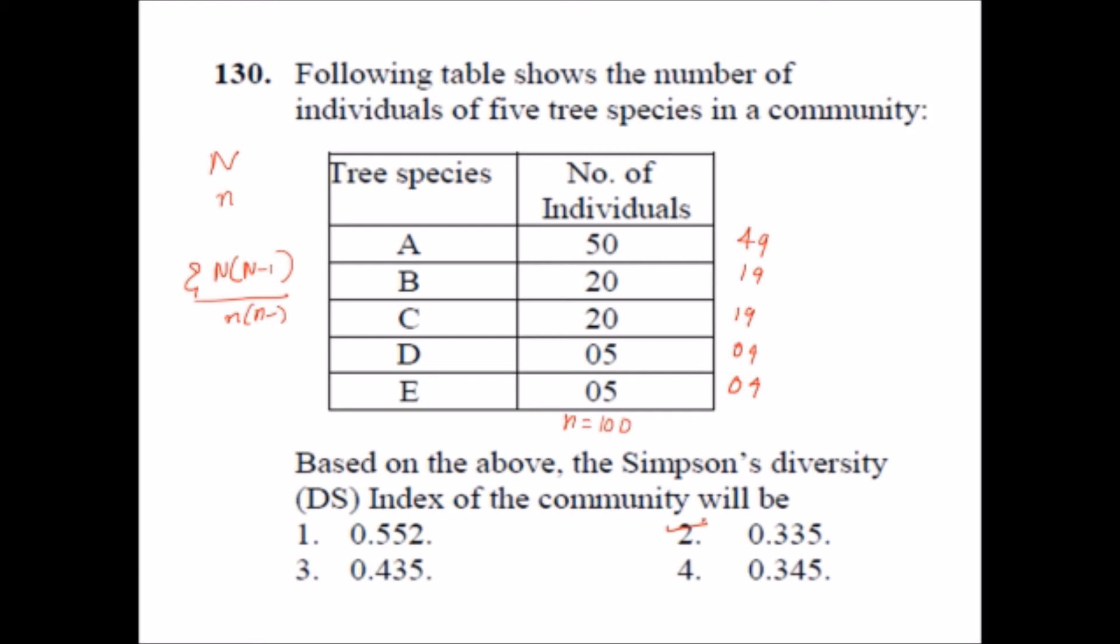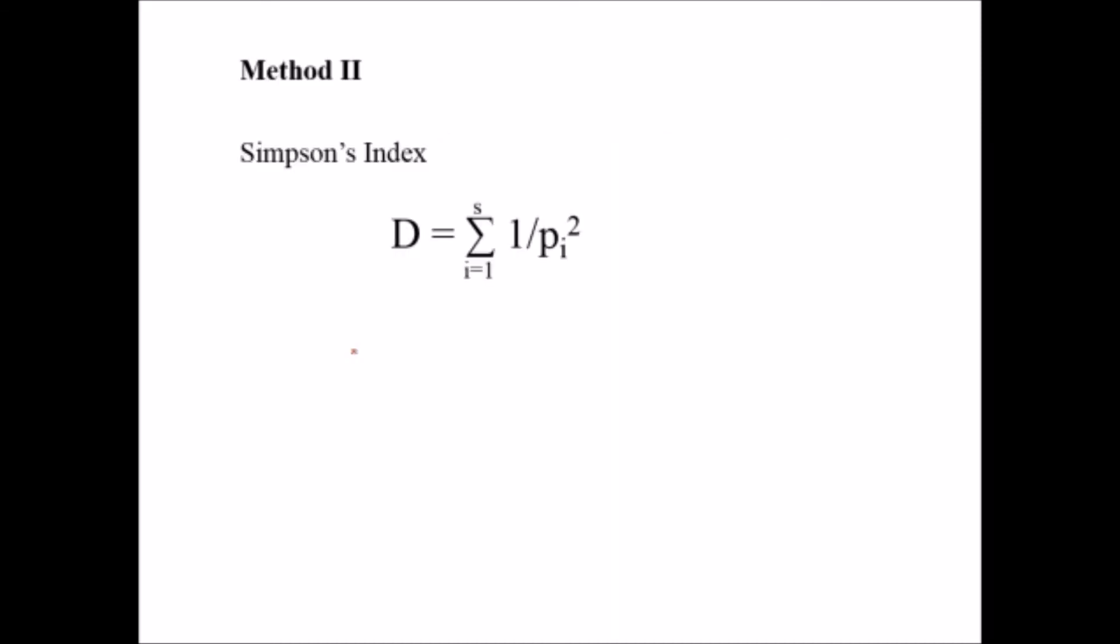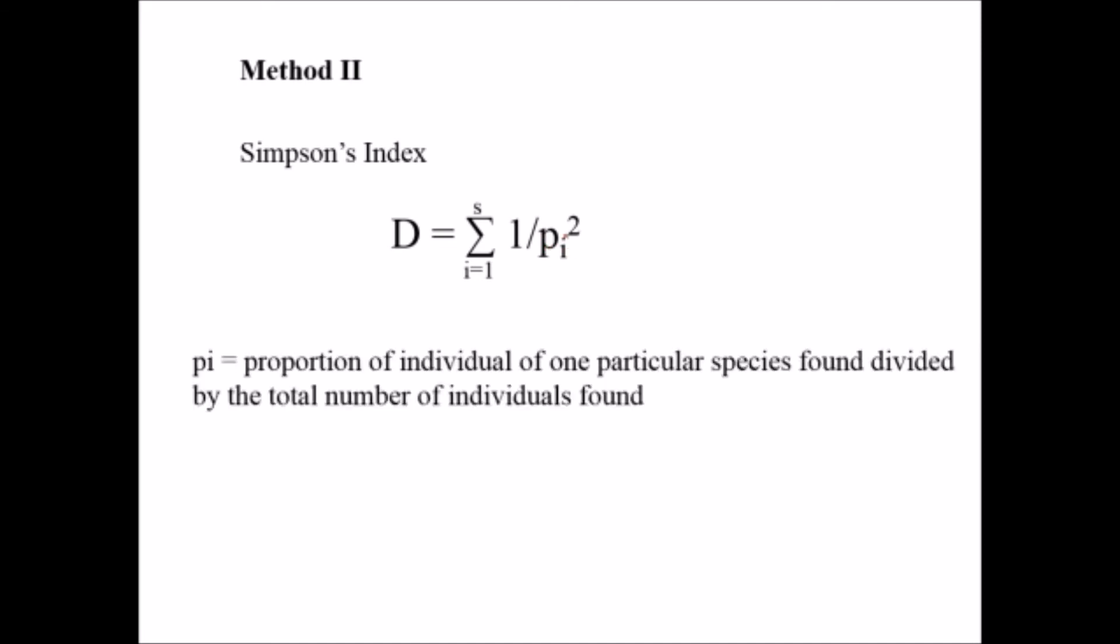So I have got the approximate value when I have used this formula. It doesn't matter, this formula is also right, but I want another formula which is more easier than this formula and convenient too. And this is simply we can represent the Simpson index by summation of 1 by pi square. What is the pi here?